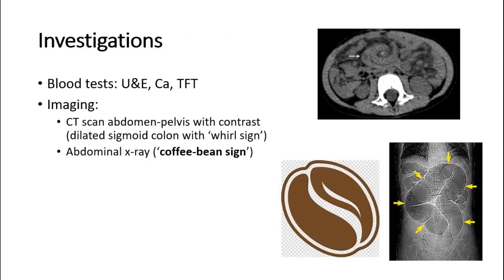For investigations, routine bloods should be taken, including electrolytes, calcium, and thyroid function tests, to exclude any potential pseudo-obstruction. The initial investigation for suspected bowel obstruction is a CT scan of the abdomen and pelvis with contrast, as this is much more sensitive and specific for bowel obstruction and also identifies the site and cause.